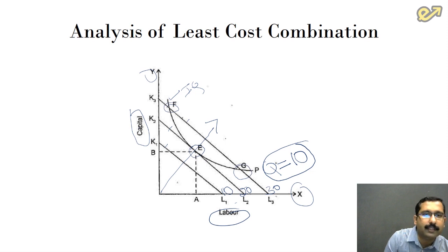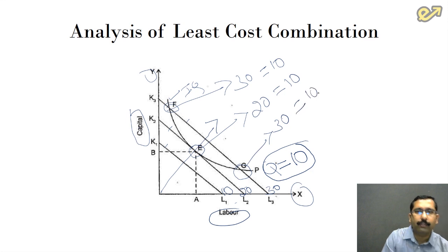It means that at this point we are incurring 30 rupees and we are getting the output of 10 units. At this point we are incurring 20 rupees and we are getting an output of 10 units. And at this point we are incurring again 30 rupees and we are obtaining an output of 10 units. Now it is commonsensical—which is the combination that you would go with?